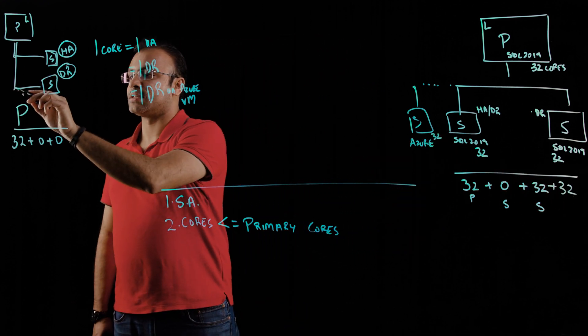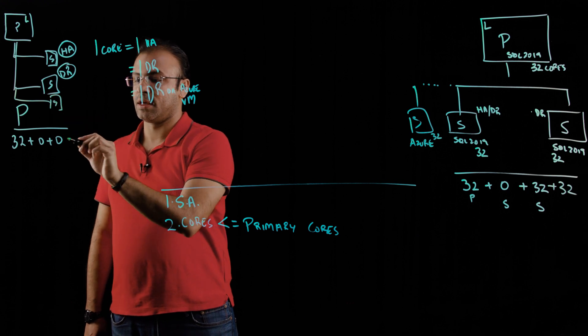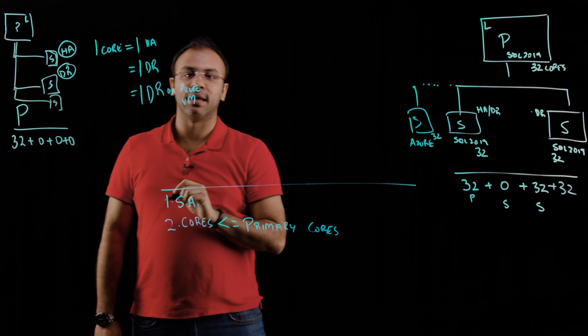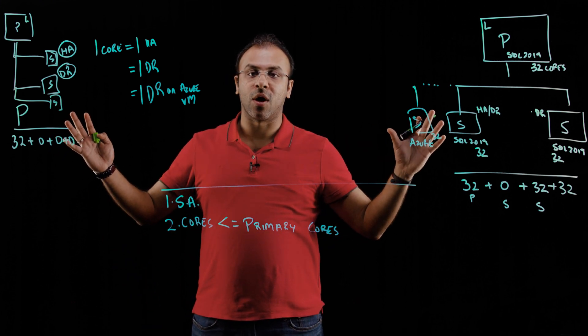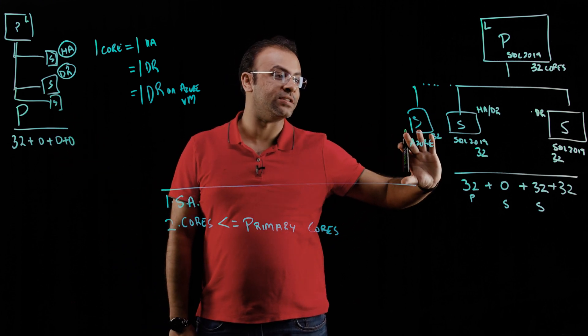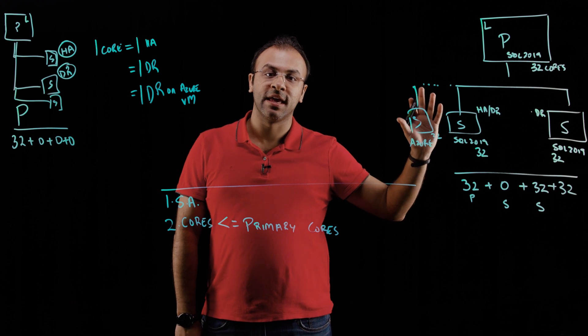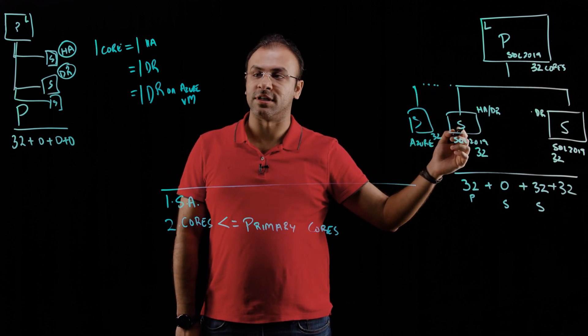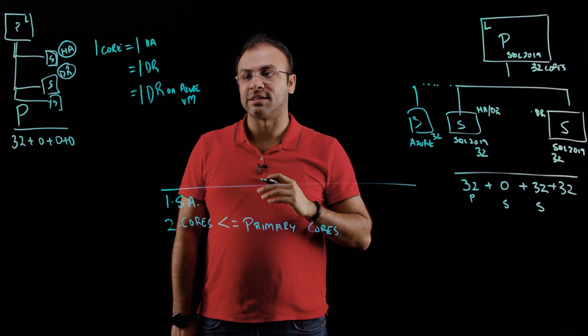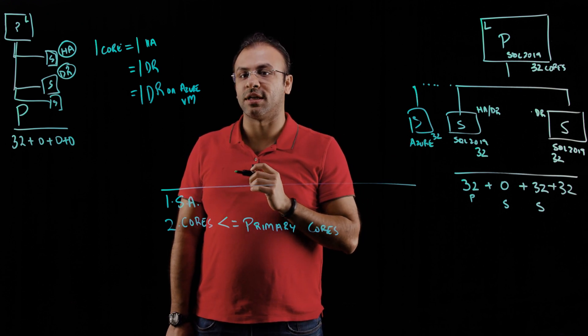In this case, I add another secondary and I pay zero cores for this. So your architecture can actually leverage better high availability and disaster recovery with a lower cost of ownership with SQL Server benefits that were changed post November 1st.